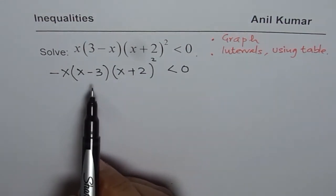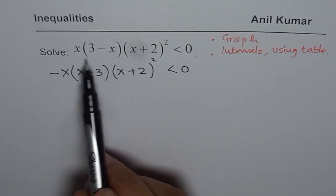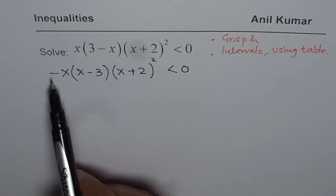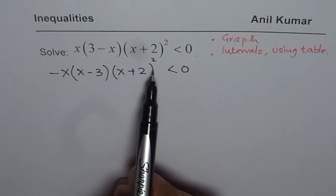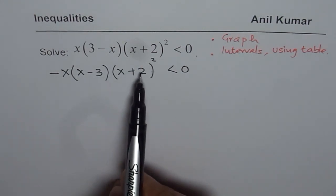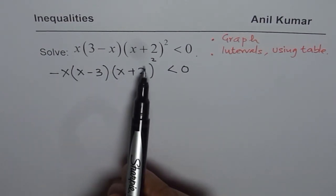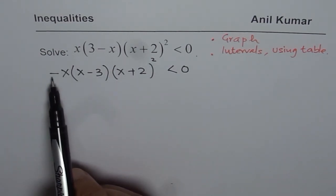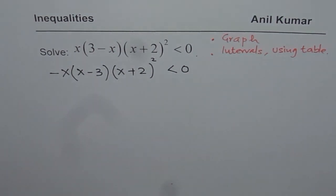This is a very interesting step because at times you may actually sketch it in the reverse direction. This clearly shows that your leading coefficient is negative. We have a polynomial here whose degree is 2 plus 1 plus 1, which equals 4. So it is an even degree polynomial with a negative leading coefficient.